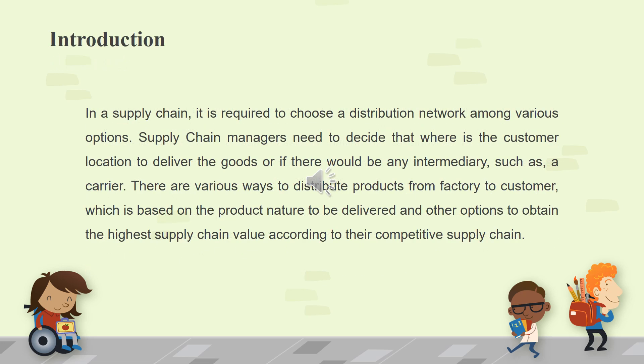In a supply chain, it is required to choose a distribution network among various options. Supply chain managers need to decide where the customer location is to deliver the goods, or if there would be any intermediary such as a carrier. There are various ways to distribute products from factory to customer, based on the product nature to be delivered and other options to obtain the highest supply chain value according to their competitive supply chain.